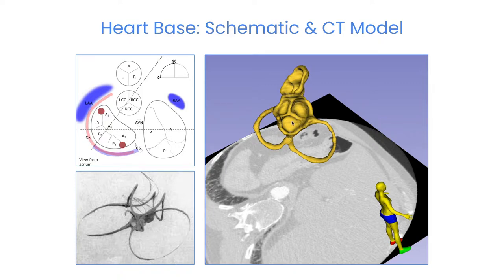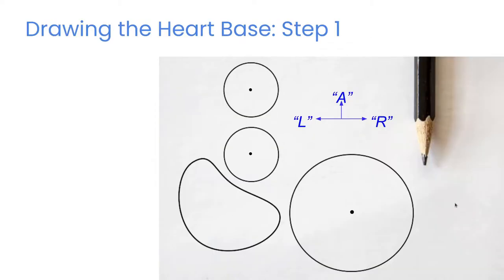On the right you see a 3D model based on a cardiac CT from the same vantage point. So let's start our drawing exercise. I suggest you follow along with a pencil and paper if you haven't done this before. I've included orientation markers here to remind us that we're talking about cardiology orientation terms and not standard anatomical terms — so right means right heart, left means left heart, and so on.